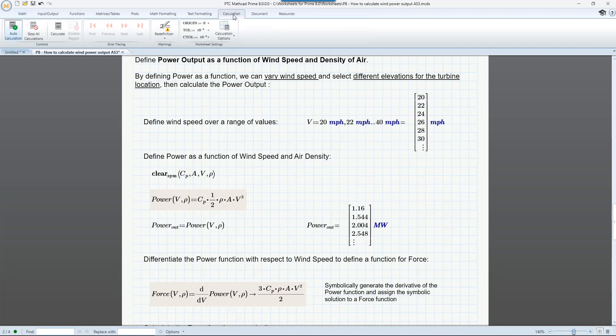In PTC Mathcad Prime 8, if you redefine an already defined identifier in your worksheet, you will now get a warning to let you know. This includes both built-in and user-defined identifiers such as variables, constants, and functions. Sometimes this redefinition is intentional, but for cases where it's not, being able to see that it's occurred is critical to the calculation integrity of the worksheet.